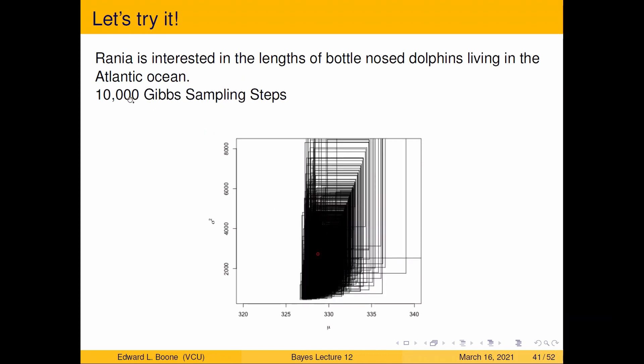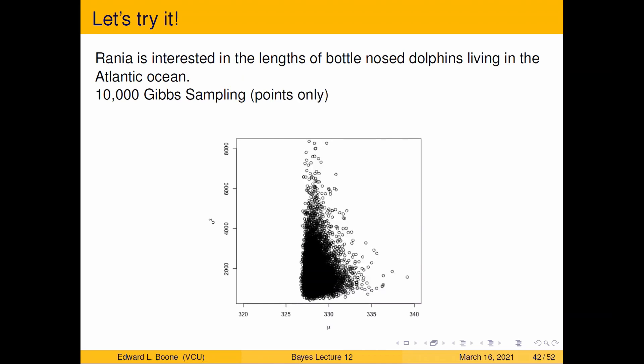So this is 10,000 steps of Gibbs sampling. Now what's interesting is we only keep the, after we've taken two steps in this case, or however many parameters you have, that's how many steps you're going to take. And this is what the data set looks like. So this is what my samples look like for my problem here that I was worried about. So this is about the dolphins.